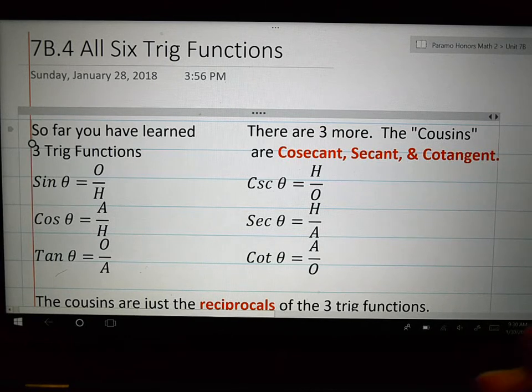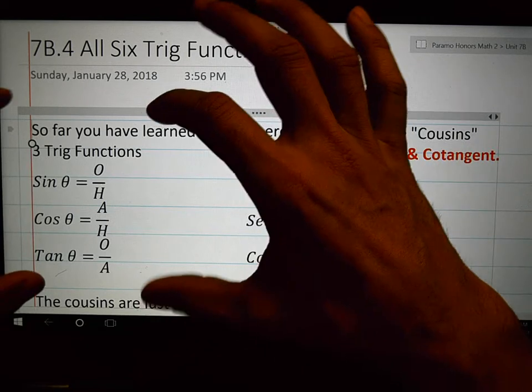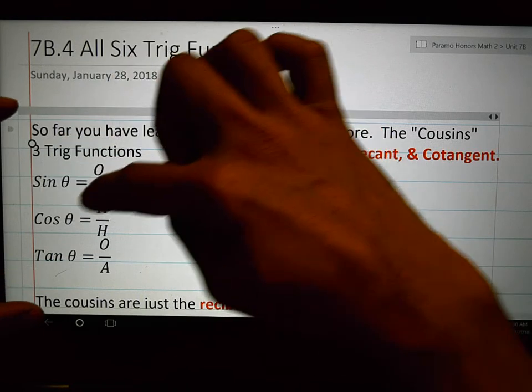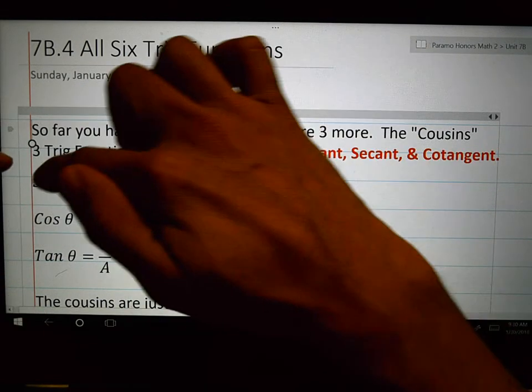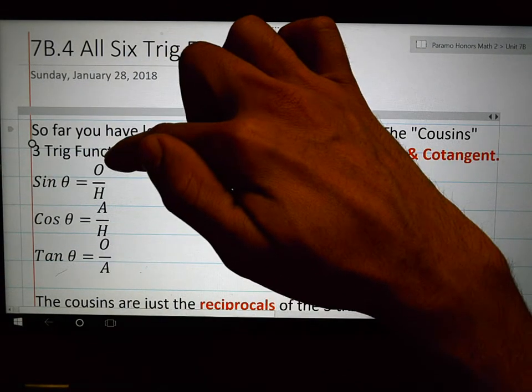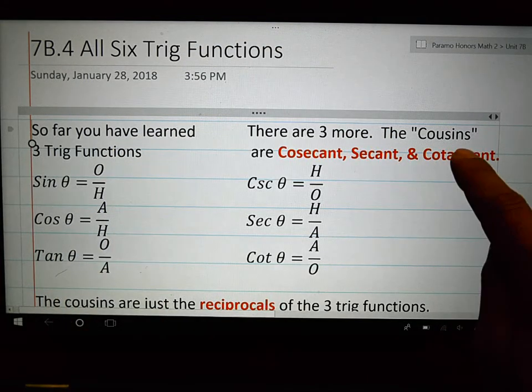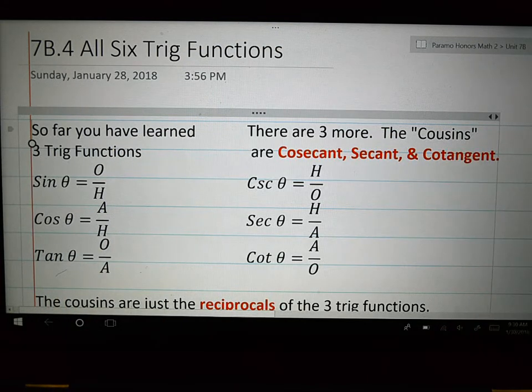And that is my analogy because if you learn SOH CAH TOA, the sine of theta, the cosine of theta, the tangent of theta, and you remember that the sine of theta is O over H, which what I have called the cousins, that's what I've always used in my AMA class because they're similar, but they're a little bit different.